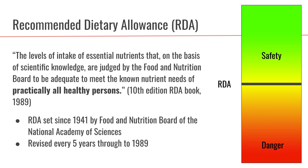Let's take a look at the first type of DRI — the Recommended Dietary Allowance, or RDA. From the 1989 RDA book, the RDA is the level of intake of essential nutrients that, on the basis of scientific knowledge, are judged by the Food and Nutrition Board to be adequate to meet the known nutrient needs of practically all healthy persons. Taking a historical perspective, the RDAs have been set starting in 1941 by the Food and Nutrition Board, a component of the National Academies of Sciences, and every five years since then they have reviewed the science to see if the RDAs need to be changed.